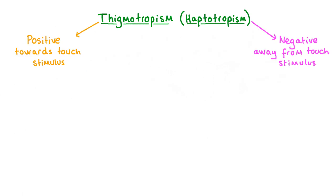Thigmatropisms, like most tropisms, can be negative or positive — growing away from or towards a stimulus. In the climbing plant example, the tendrils contacting an external solid object are stimulated to grow towards it, which is called positive thigmatropism.